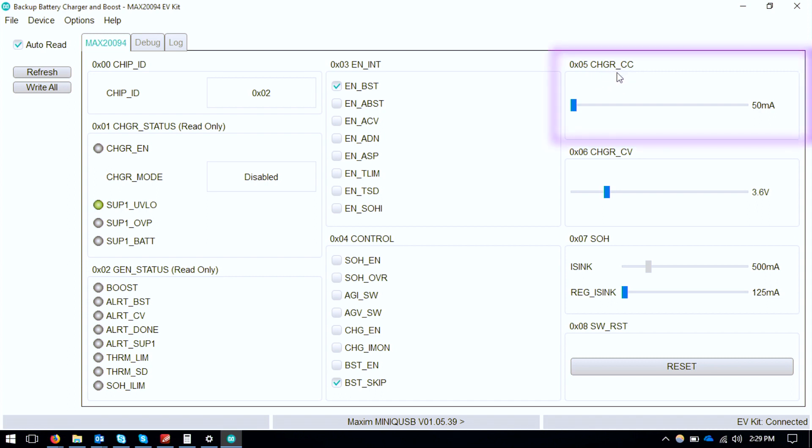So charger CC is how much current will be used to charge the battery. Right now it's set to 50 milliamps and I'll keep it at that for now so that we can see the difference it makes later.